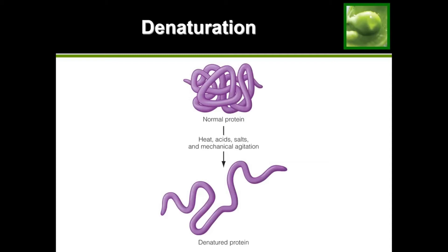Starting off with denaturation — denaturation happens in our stomach and it is what is required for our proteins to be able to be digested. Proteins need to be denatured before they can be digested. Denaturation is when the protein is deactivated and as a result, it untangles. This is important because normally the protein is in this tangled up mess like you see over here, and when it's in this shape, the enzymes can't get into all of those folds and bends and can't access all parts of the protein to break it down.